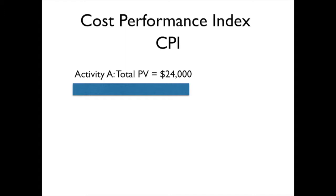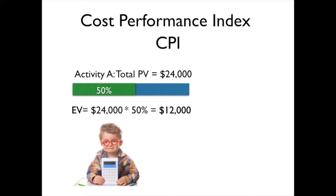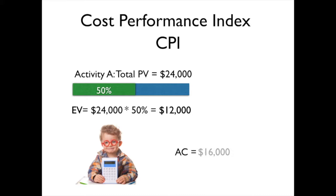Let's look at an example. Here I have an activity where the total plan value is $24,000. 50% of that activity is complete, so we'll take $24,000 times 50% and get $12,000 as our earned value. In order to get our actual costs, we're going to go to our accountant, and our friendly accountant is going to tell us that our actual costs so far are $16,000 on this particular activity.